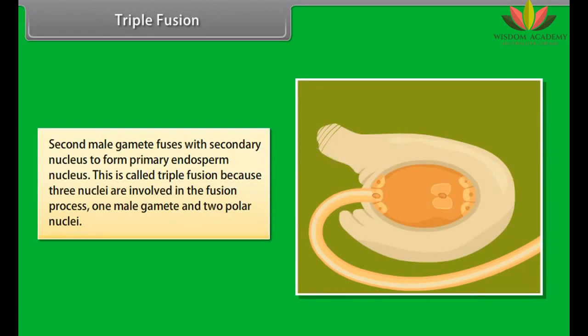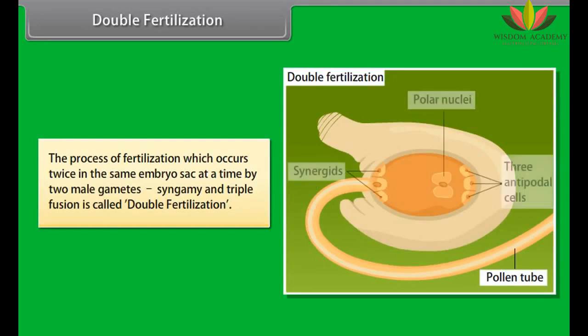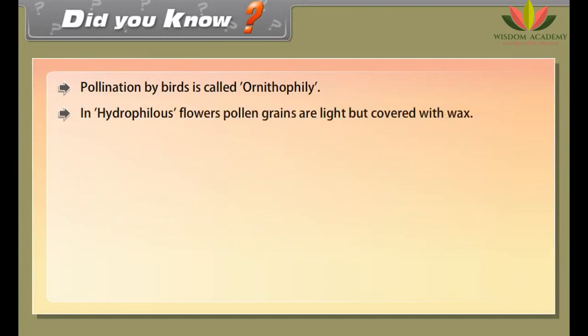After fertilization, the zygote divides several times to form an embryo within the ovule. The ovule then develops a tough coat and gets converted into a seed. The seed is the reproductive unit of a plant; it contains a future embryo which develops into a seedling.